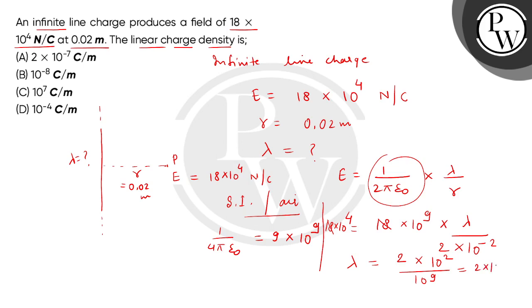This is 2 multiplied by 10 to the power minus 7 coulomb per meter. The correct answer is option number 8.